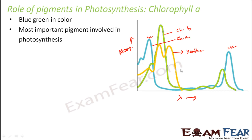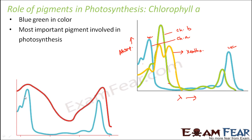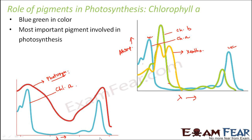If you look at xanthophylls on the graph, maximum absorption occurs only on one side of the spectrum with no absorption on the other side. Chlorophyll B shows very high absorption on one side but comparatively very low absorption on the other end. Chlorophyll A shows equally high absorption on both the blue and the red end, with very low absorption in the middle. The red curve on the graph shows the photosynthesis action spectrum — the rate of photosynthesis compared to the wavelength of light — and the rate is high at both the blue and the red end.